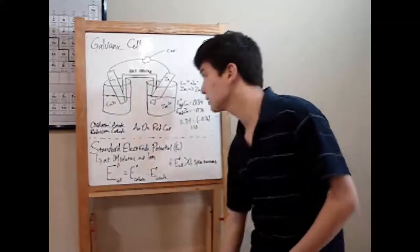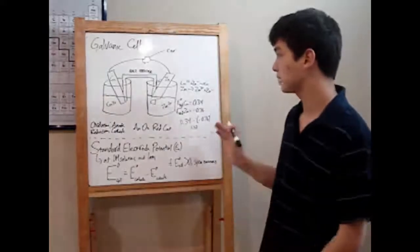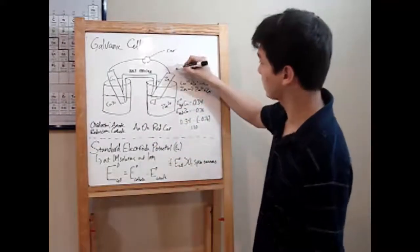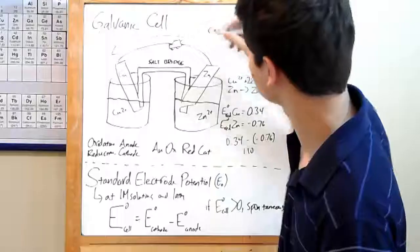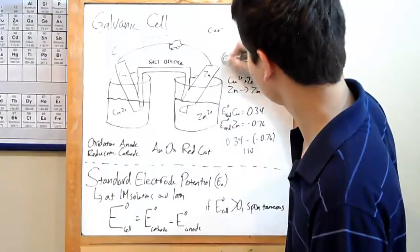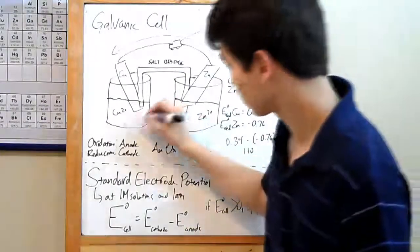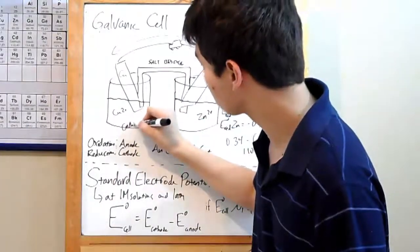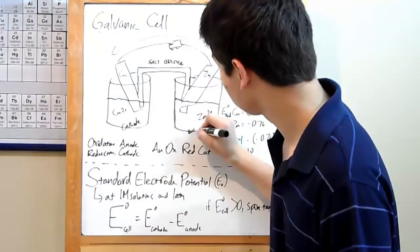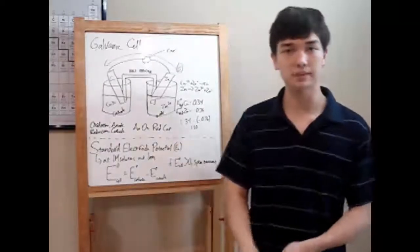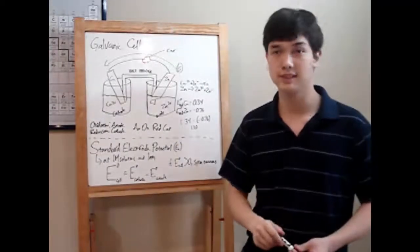That means that electrons will be coming to copper and leaving zinc. The electron flow is this way. And then you can identify the copper becomes the cathode, and zinc is your anode. And you've done basically everything you can possibly do with a galvanic cell. Your chemistry teacher should be happy.